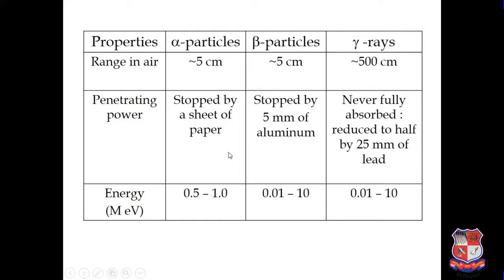When we consider energy in million electron volts: alpha particle has energy from 0.5 MeV to 1 MeV. Beta particle has energy from about 0.01 MeV to 10 MeV. Gamma rays also range from 0.01 MeV to 10 MeV. When gamma rays are emitted from any nucleus, the parent nucleus converts into a daughter nucleus and becomes highly stable — the highly unstable nucleus emits so much energy and becomes a very stable nucleus.